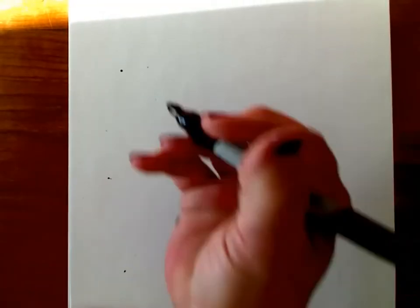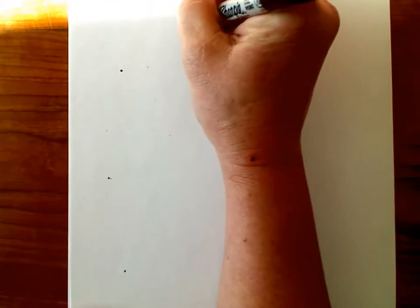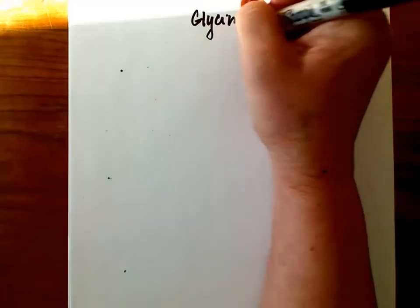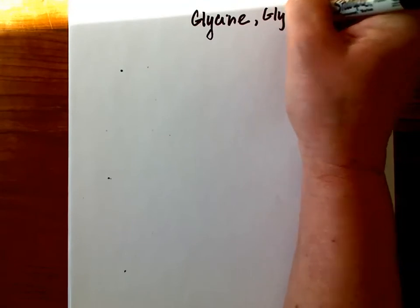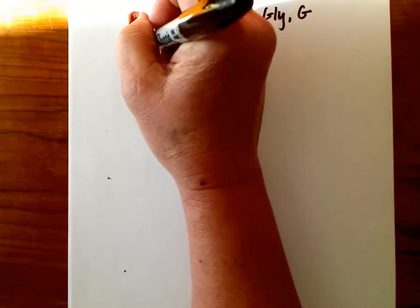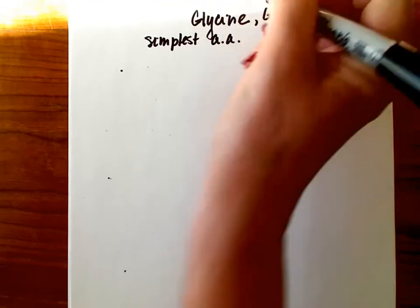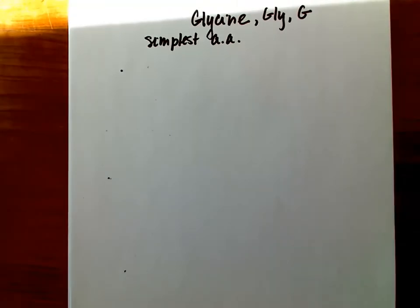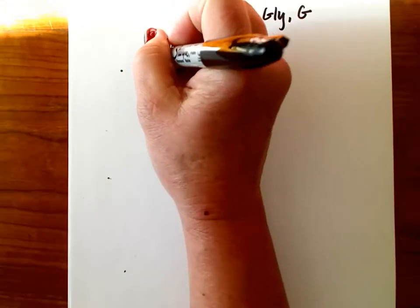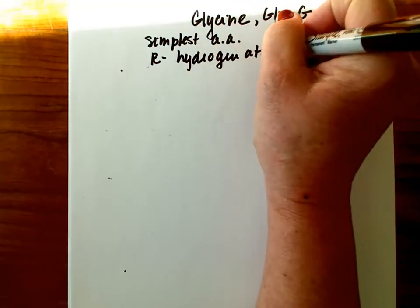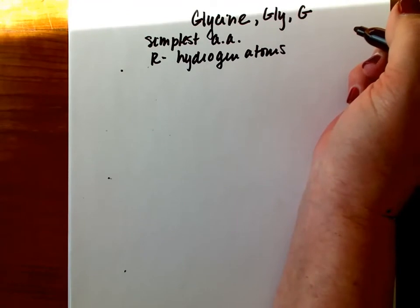Alright, so let's try to draw those amino acids again. This time we'll start with the simplest amino acid, which is glycine. You need to know the full name, the three-letter abbreviation, and the one-letter abbreviation for all 20 of the standard amino acids. Glycine is the simplest amino acid. Its R-chain is simply a hydrogen atom, thus it is a nonchiral molecule.